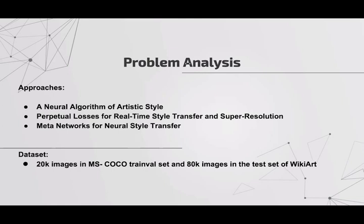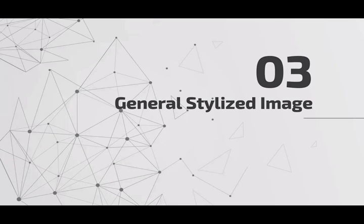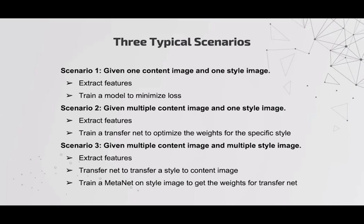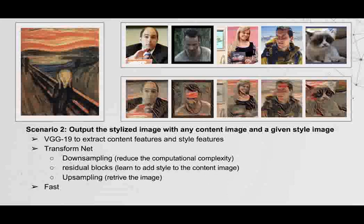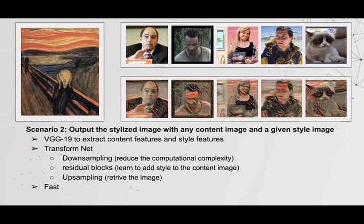More details about general stylized memes are as follows. For a general stylized image, we considered three scenarios and focus on their pursuit. Now imagine our customer has uploaded two images — one content image and one style image. We use VGG-19 to extract both features and in each iteration we add some new style to the content image. After about 20 seconds it looks nice, but users won't be patient if they have multiple content images to stylize. So we train a network for a specific style and use it to stylize any content image. We downsample and use residual blocks to add style to the input image, then upsample to retrieve it — taking less than one second per image.